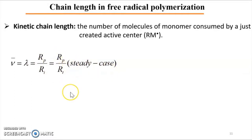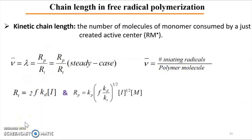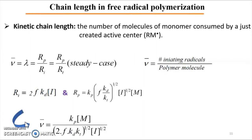In the case under study, the kinetic chain length is the rate of propagation over the rate of termination — or equivalently, the initiating radicals divided by the dead polymer molecules in the case of termination. By substituting the rates by their values — the rate of initiation and the rate of propagation — we can determine the kinetic chain length as a function of the rate constants of propagation, decomposition, and termination, and also as a function of monomer and initiator concentrations.